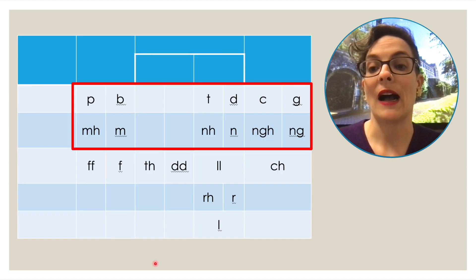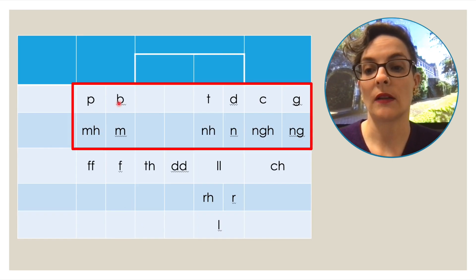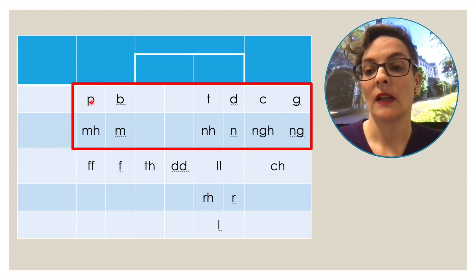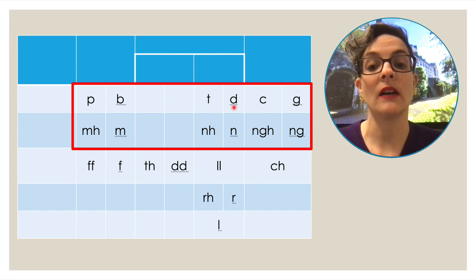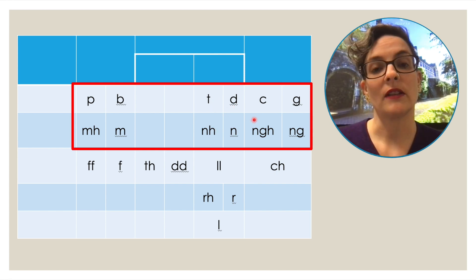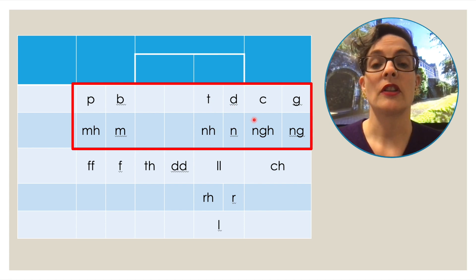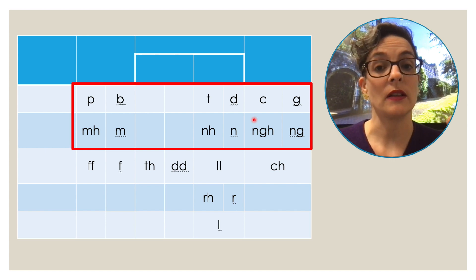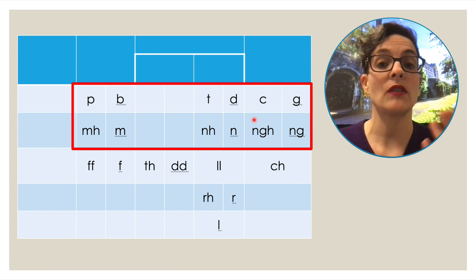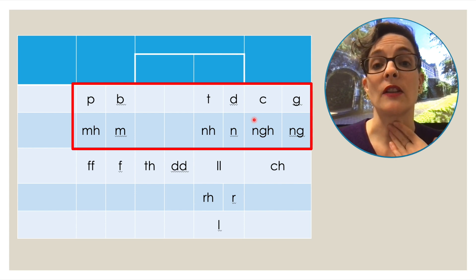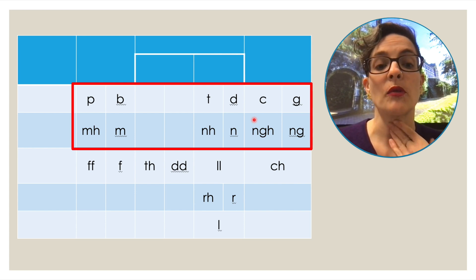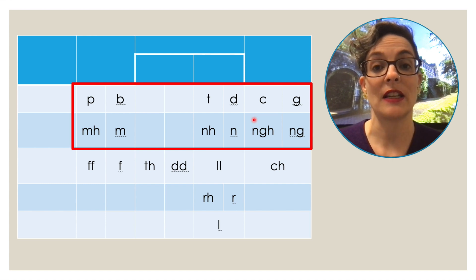Here are the letters involved in nasal mutation. The dimension of voice is fairly easy — it's either one or the other, it's binary. Consonants are either voiced or voiceless, and you can feel it. If you're not sure whether a letter is voiced or not, put your hand on your larynx and feel whether there's any vibration.